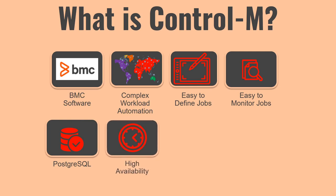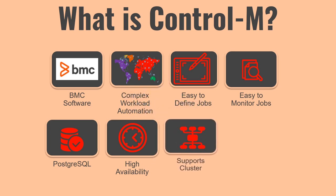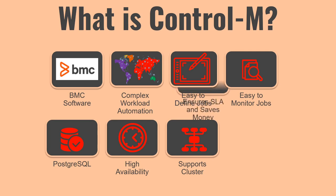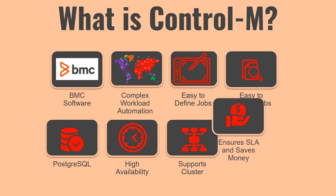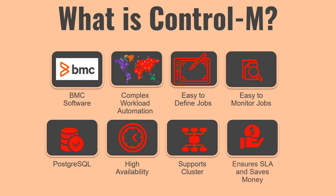Control M provides high availability, so you can be assured that Control M is always going to be available whenever you need it. Control M achieves high availability in different ways — one of the most popular ways is by using Control M in a cluster. Control M does support clustering, and almost all of its components support clustering, so you are not going to have a single point of failure. Using Control M you can also do predictive or if-else analysis, which lets you know what is going to happen if one of the jobs fails, so you'll be able to manage your SLA and save money.